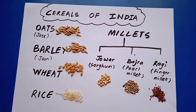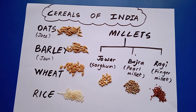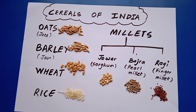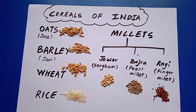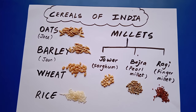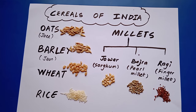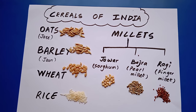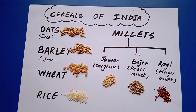Whenever we are studying this chapter, we study cereals, millets, etc. Generally, we are all aware of the main cereals like rice, wheat, maize. But whenever examples like oats and barley are written, we are clueless about what oats and barley are and how they look like.